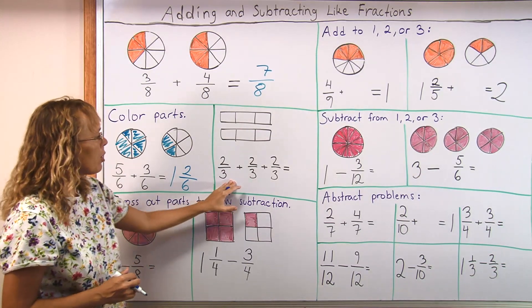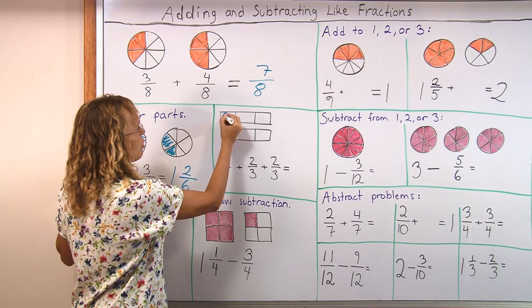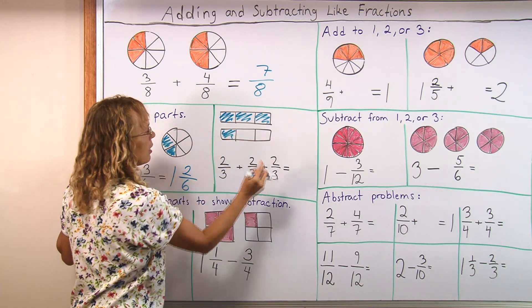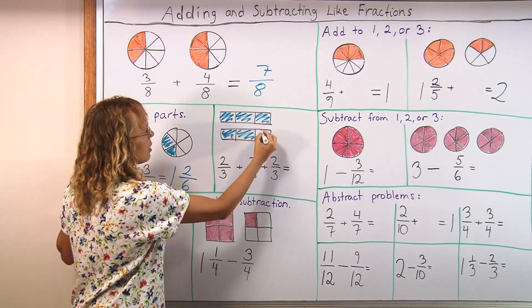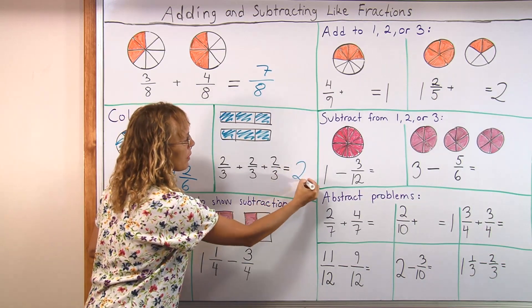Here's another one of those. 2 thirds plus 2 thirds plus 2 thirds. And we just color 2 thirds. The next 2 thirds, you know, a third from here and a third from here. And the last 2 thirds. Like that. And so the answer is then 2, 2 wholes.